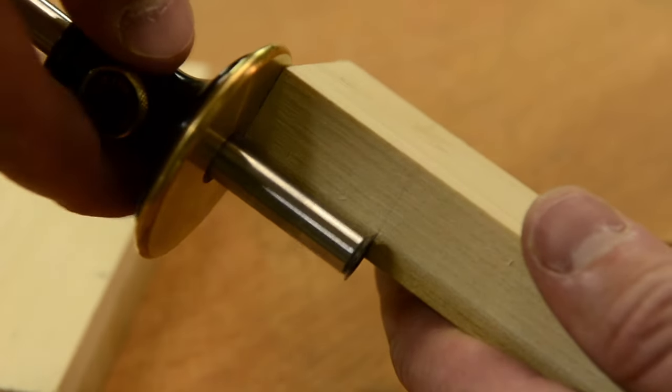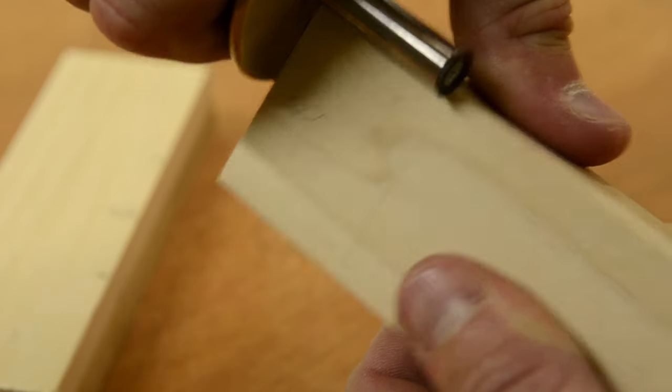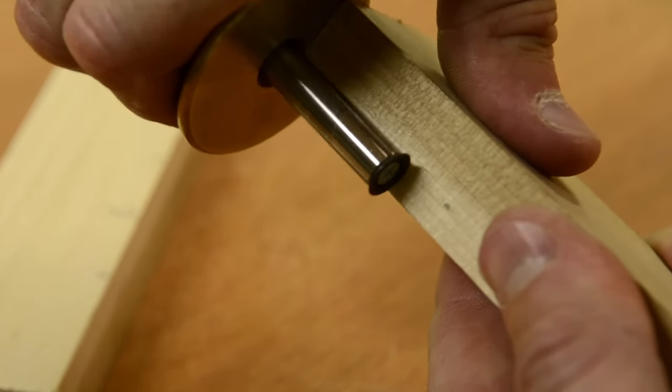Next, take a marking gauge and scribe a mark all the way around the end of the tenon. This is the shoulder line. This is where the tenon will stop going into the mortise.